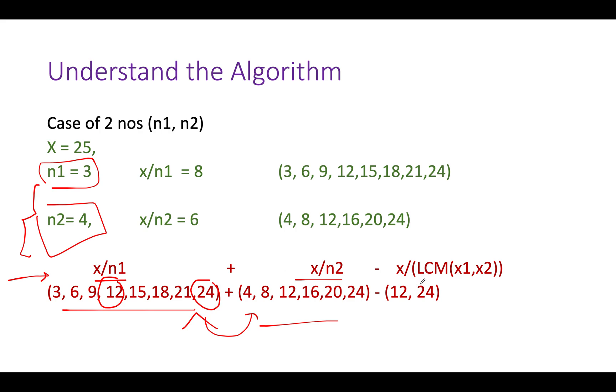We have the first series, the second series, we add these two up. Since there were few elements that get added twice, those would be 12 and 24, we identify how many factors of LCM exist up till x. That would be equal to 2 because x is 25 and LCM of n1 and n2 is 12. The duplication gets cancelled and we have an updated series from 3 to 24 wherein no element is duplicated.